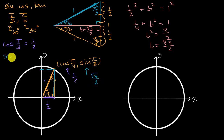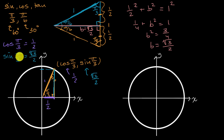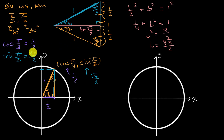Sine of pi over three is equal to square root of three over two. These are good ones to know. I never say to just memorize things — it's always good to know how to derive them in case you forget. But if you had to memorize some, I'd highly recommend memorizing these. And from these, we can figure out the tangent — the tangent is just the sine over the cosine.